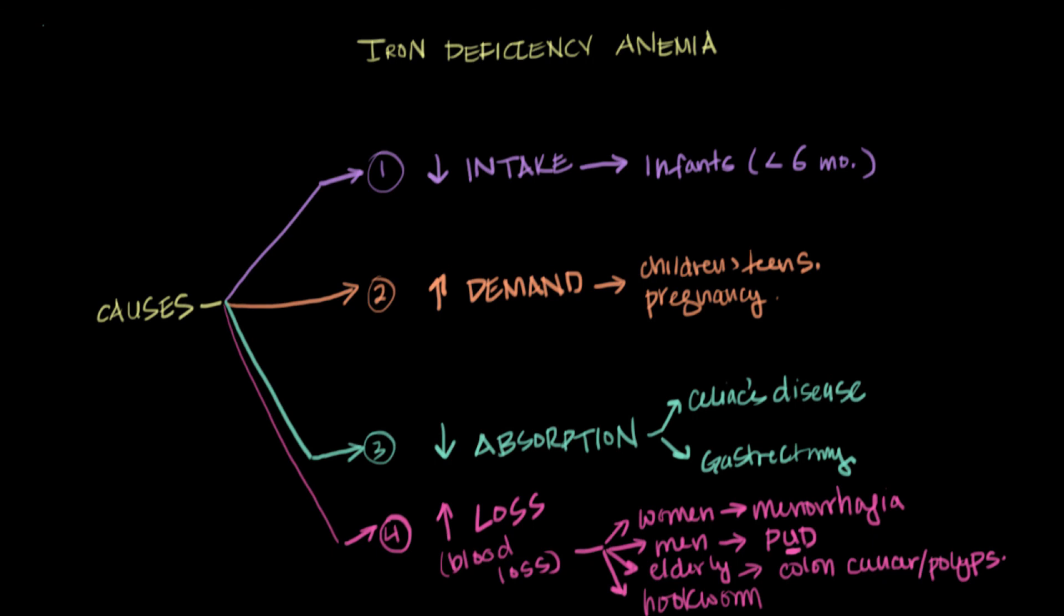Now, iron deficiency anemia is actually the most common cause of anemia. And these are the most common causes of iron deficiency anemia. So they're really important to understand and to remember. Because if somebody does present with anemia, it's most likely to be iron deficiency anemia. And if it's iron deficiency anemia, it's most likely to be attributed to one of these causes listed over here.